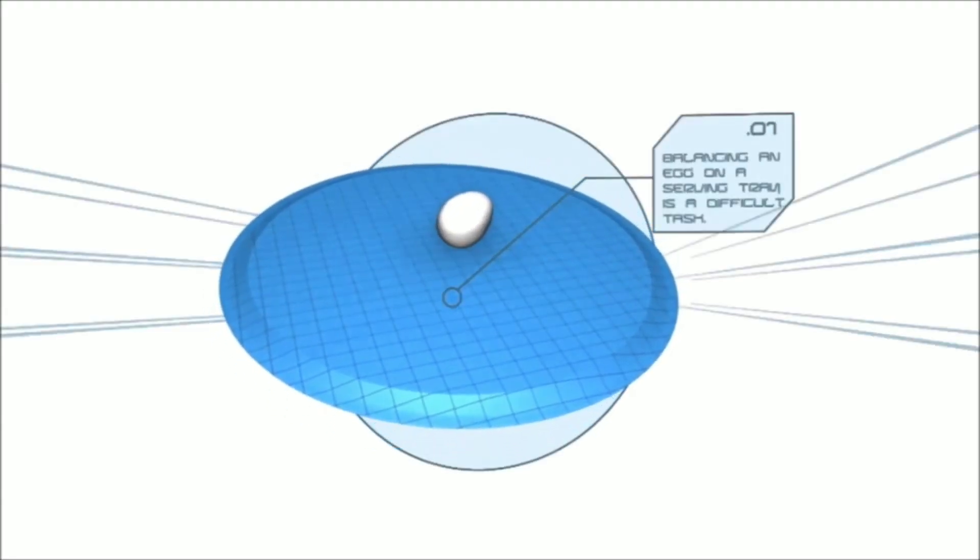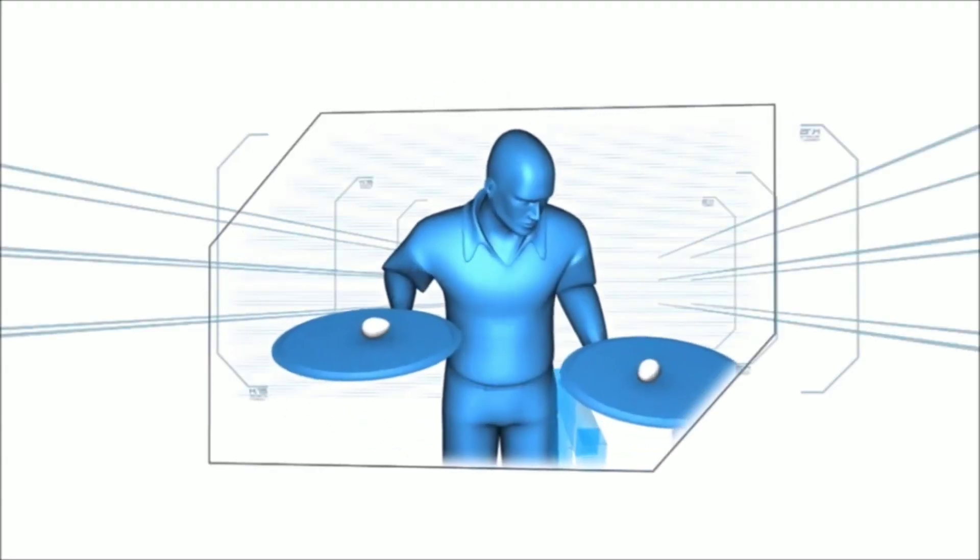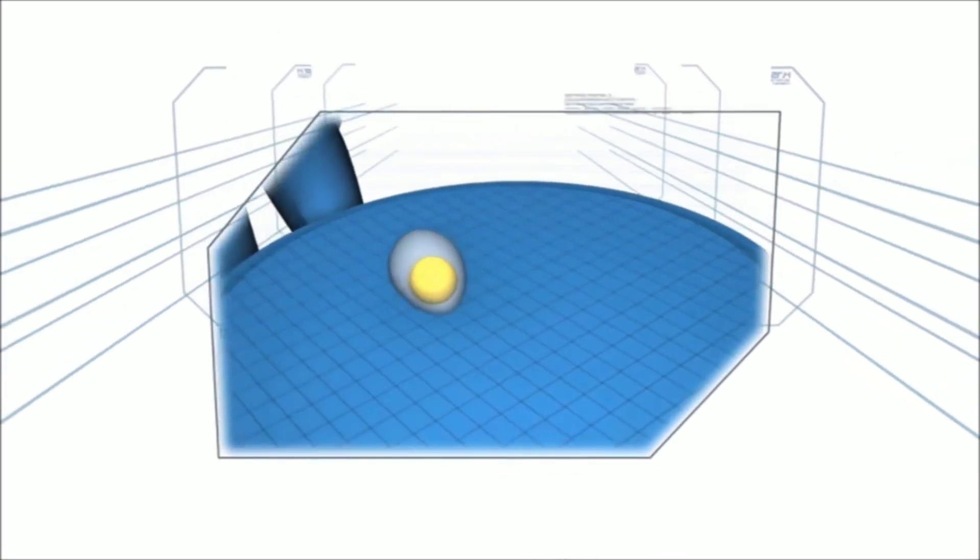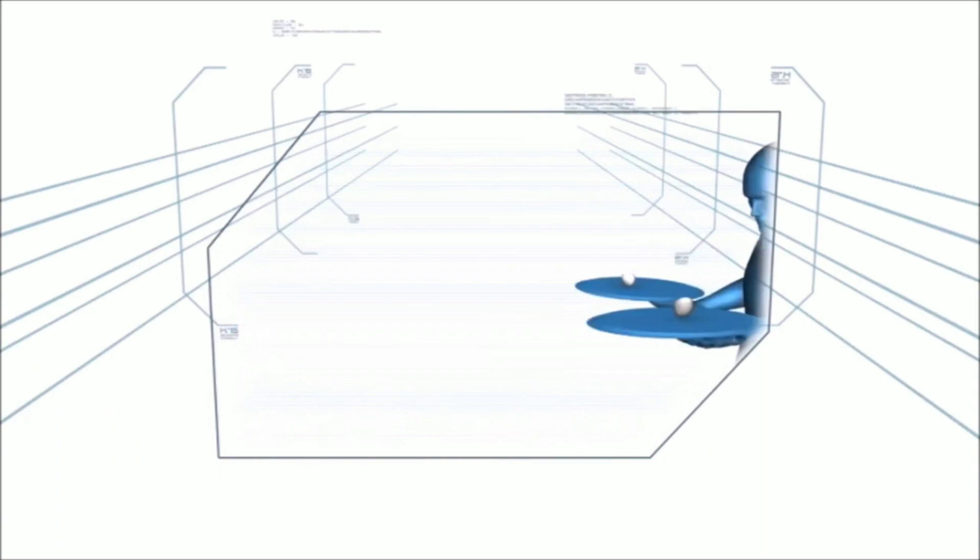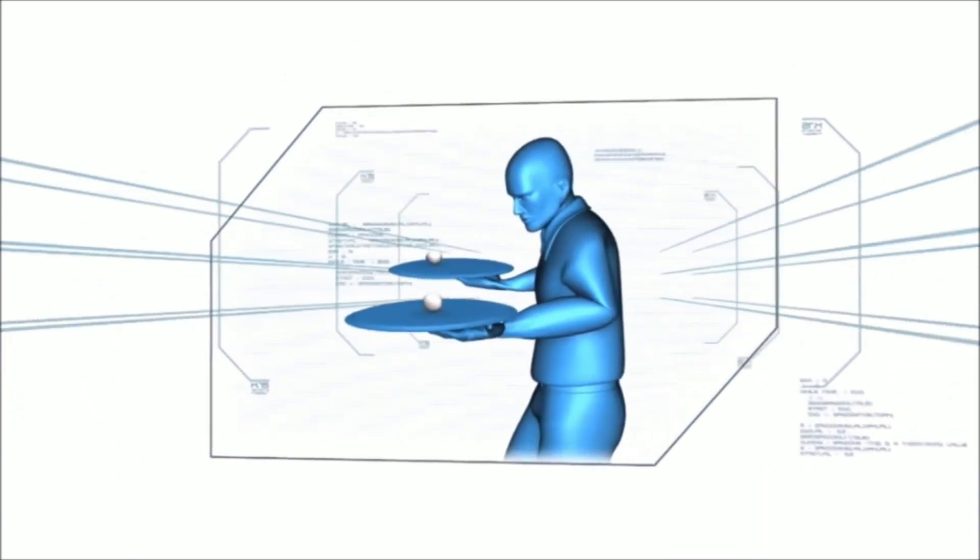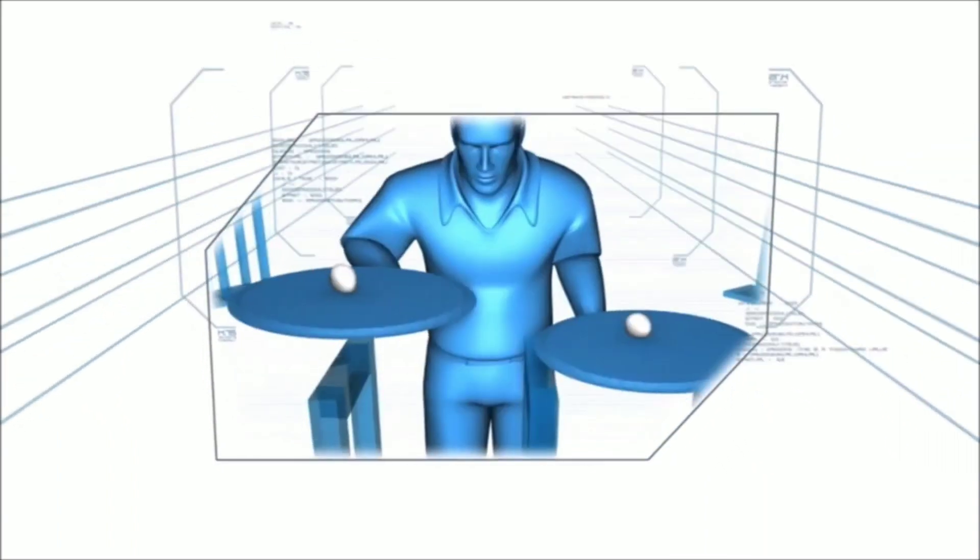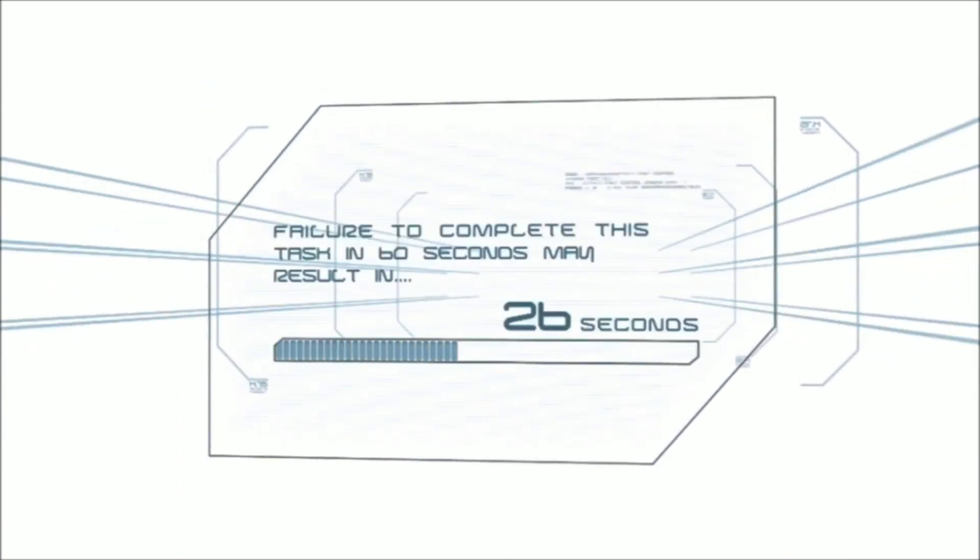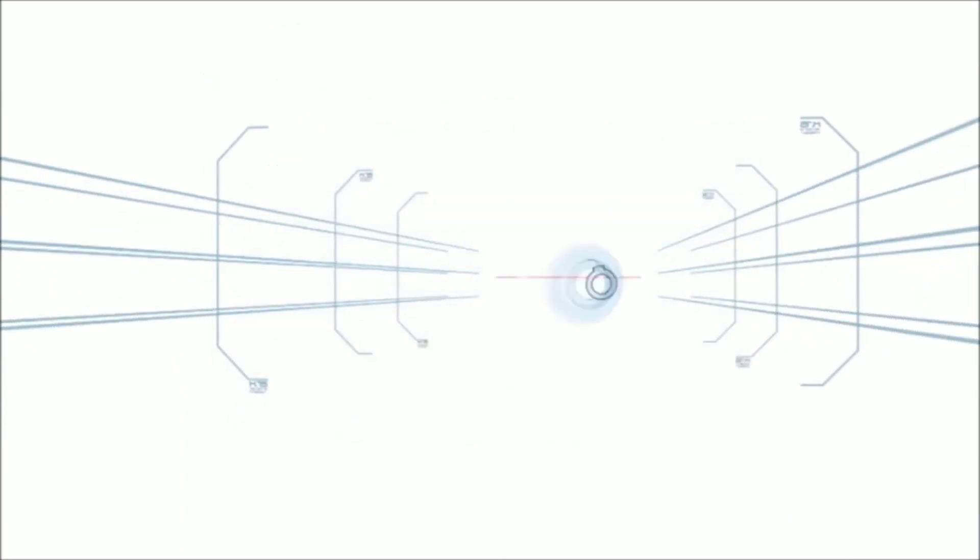In this challenge, the contestant must simultaneously balance two eggs on inverted serving trays held in either hand. The egg's fluid contents, combined with their asymmetrical shape, makes for a precarious journey. If an egg falls off, the player's hopes will be scrambled. Failure to complete this task in 60 seconds may result in elimination.